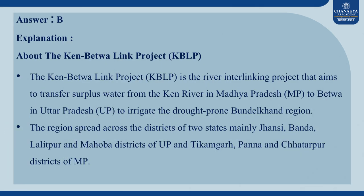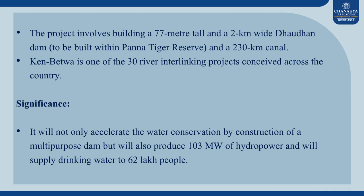The Ken Betwa Link Project is a river interlinking project that aims to transfer surplus water from the Ken River in Madhya Pradesh to Betwa in Uttar Pradesh to irrigate the drought-prone Bundelkhand region. The region spreads across districts of two states — mainly Jhansi, Banda, Lalitpur and Mahoba in UP, and Tikamgarh, Panna and Chhatarpur in MP. The project involves building a 77m tall and 2km wide Dhodan Dam and a 230km canal.